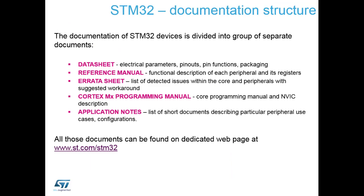Now we're going to have a look at all this documentation. We've mentioned where to find it on the web page and how you can download it from the MCU finder. We're now going to show you what the different types of documentation are and what's inside each of these documents. The five key documents you'll probably need during the design are listed on the slide. We'll go through each so you can see what's inside and how each document is structured to speed up your process of finding what you need when designing with your STM32 device.